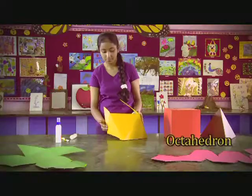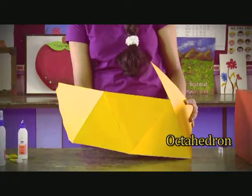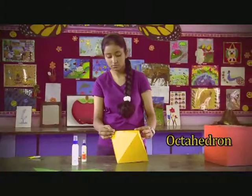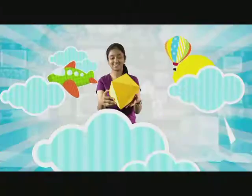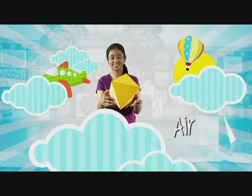Next, Agrima puts together an octahedron. It has eight regular faces, six vertices and twelve edges. The element associated with this figure is air.